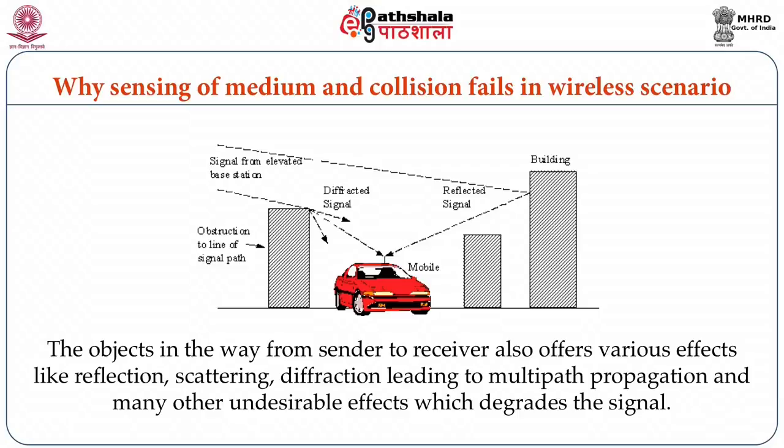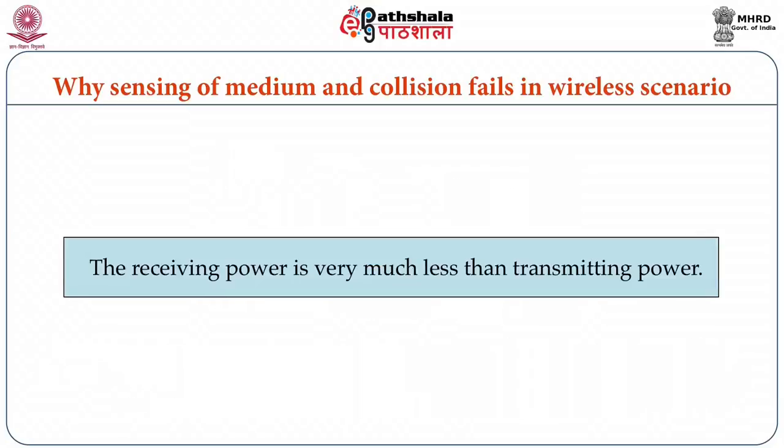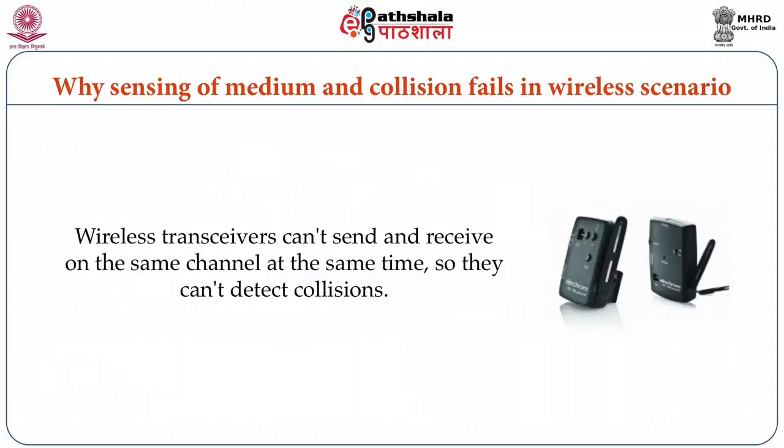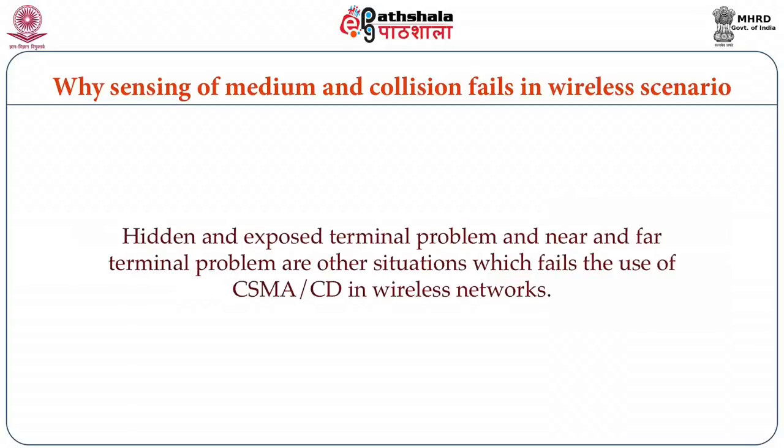The strength of the signal is not uniform throughout in wireless networks. Also, the receiving power is very much less than the transmitting power. Therefore, wireless transceivers cannot send and receive at the same time on the same channel, so they cannot detect collisions. Most importantly, hidden and exposed terminal problems and near and far terminal problems cause CSMA/CD to fail in wireless networks.